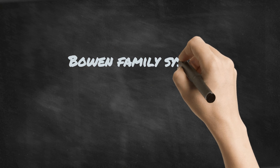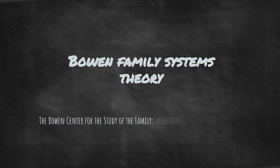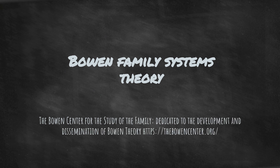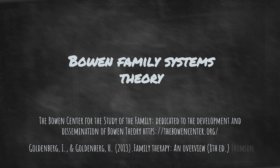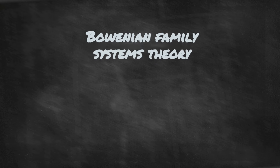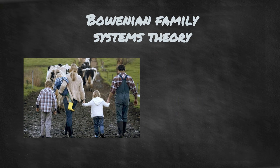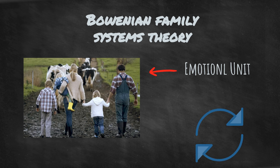Welcome to a brief overview of Bowen Family Systems Theory, as presented by the Bowen Center for the Study of the Family and by Goldberg and Goldberg's book, Family Therapy: An Overview. Bowen Family Systems Theory is a theory of human behavior that views the family as an emotional unit and uses systems thinking to describe the complex interactions in this unit.